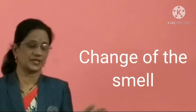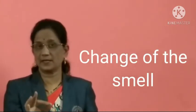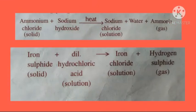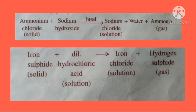The next characteristic is the change of smell. In some chemical reactions, a strong smell is noticed. For example, when solid ammonium chloride is heated with sodium hydroxide solution, ammonia gas is evolved, recognized by its strong pungent smell. Also, when dilute hydrochloric acid is heated with iron sulfide, hydrogen sulfide gas with a rotten egg smell is evolved.